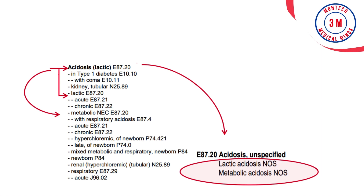Inclusion terms can be found in the tabular list under codes, listed as a different diagnosis or list of conditions mentioned under a code. This means the same code will be applicable for all listed conditions. For example, look at code E87.20, Acidosis, unspecified. E87.20 contains two terms listed as Lactic Acidosis NOS and Metabolic Acidosis NOS.